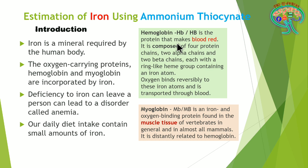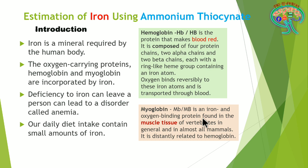Hemoglobin is the red fluid in the veins or arteries of the body, composed of four protein chains — two alpha chains and two beta chains — each having a ring-like heme group with an iron atom, which reversibly binds oxygen and delivers it to body tissues. Myoglobin also contains iron and is an oxygen-binding protein found in muscle tissue, distantly related to hemoglobin.